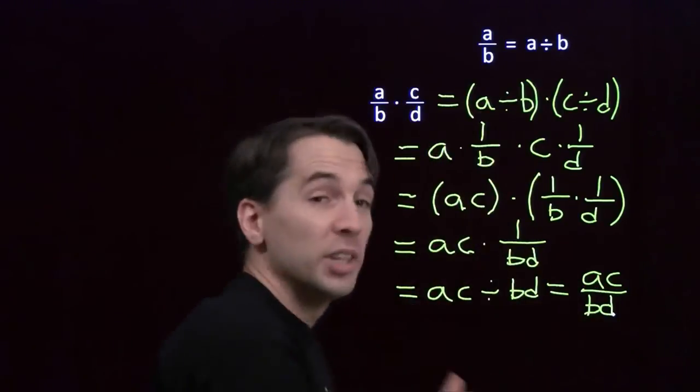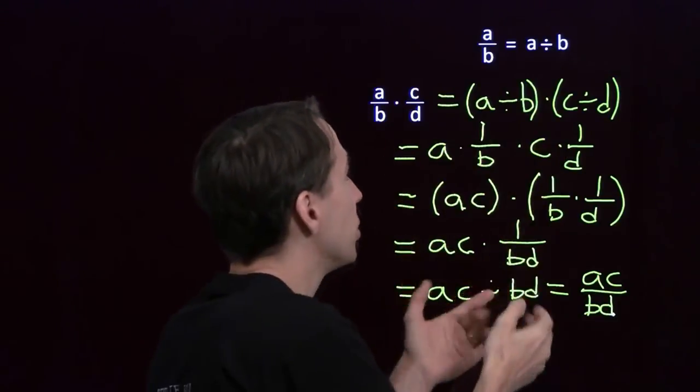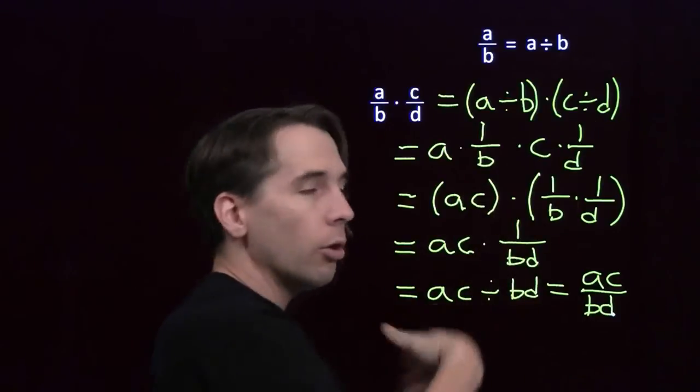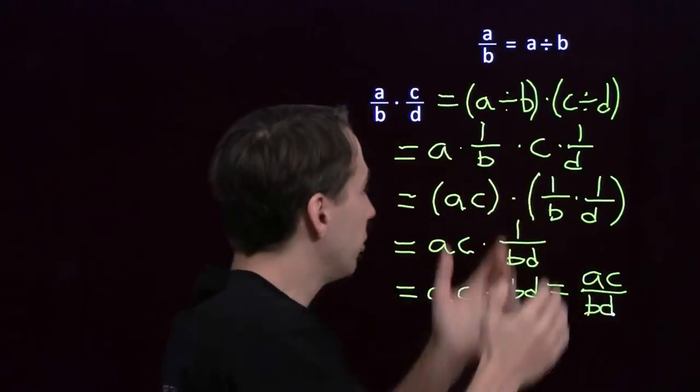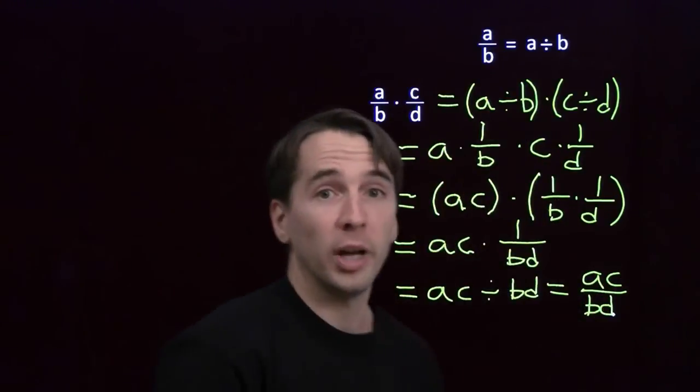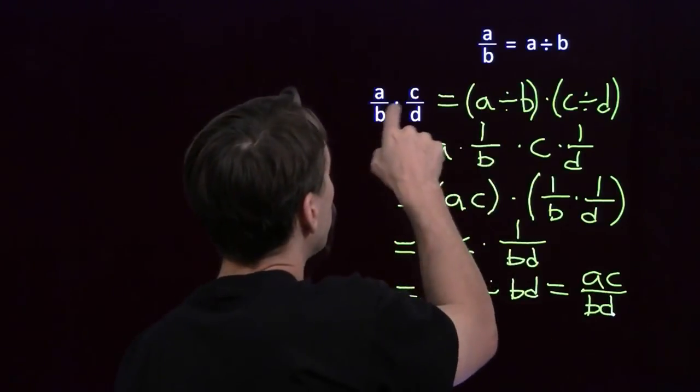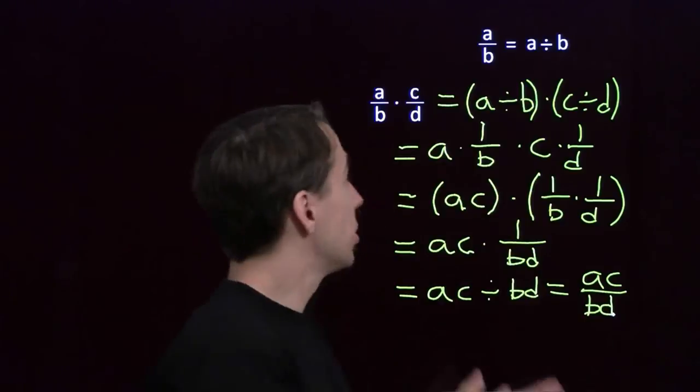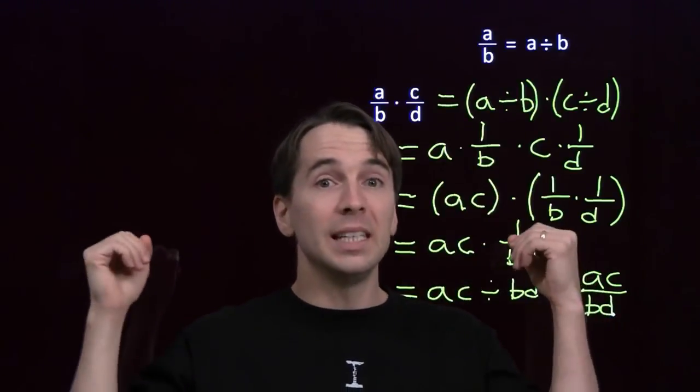And look at that. This really isn't anything new. All we're doing here is using our definition of a fraction, it's just a division. And then we're using all the rules we already knew for multiplication and division. And we see that when we multiply two fractions, what we do is we multiply the tops and we multiply the bottoms. That's all there is to it. We get A, C over B, D and we are done.